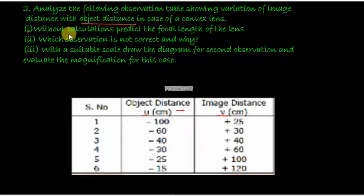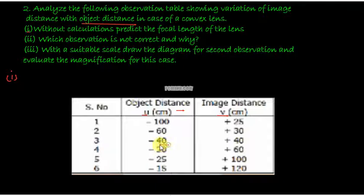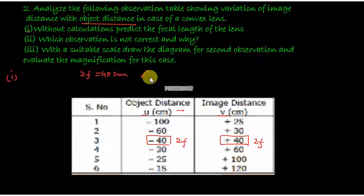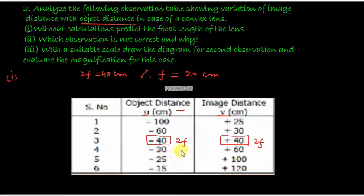The first part asks us to predict the focal length of the lens without calculations. When you look at the table, there is one observation where the object distance and image distance are the same. This is the position where the size of the image and object are also the same, which occurs at 2f. So the object is placed at 2f in front of the lens and the image is formed at 2f behind it. If 2f equals 40 centimetres, then f equals 20 centimetres. That is the focal length, found simply by identifying where u equals v in the table.